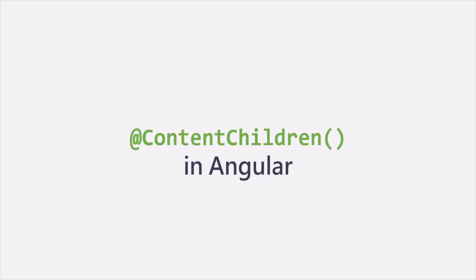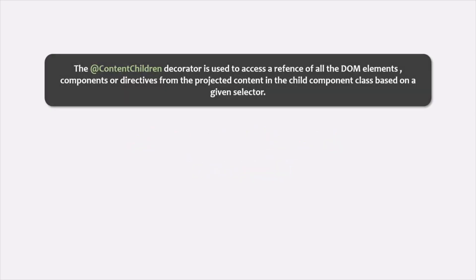In the last lecture, we learned about ContentChild decorator and what is its use. Now in this lecture, we are going to learn about ContentChildren decorator and how it is different from ContentChild decorator. The ContentChildren decorator is used to access a reference of all the DOM elements, components, or directives from the projected content in the child component class based on a given selector.